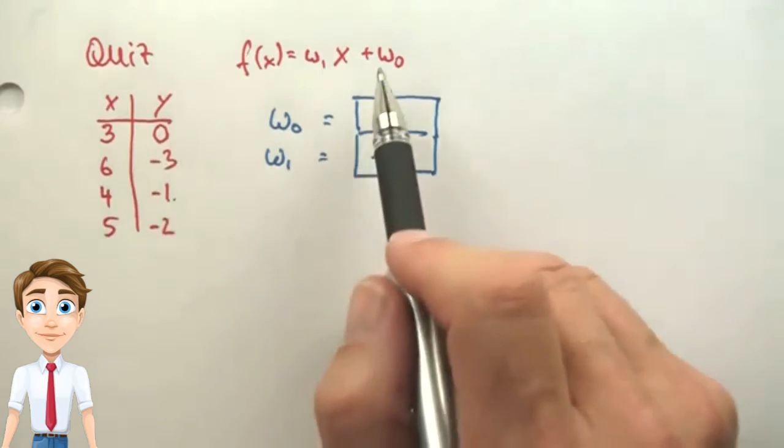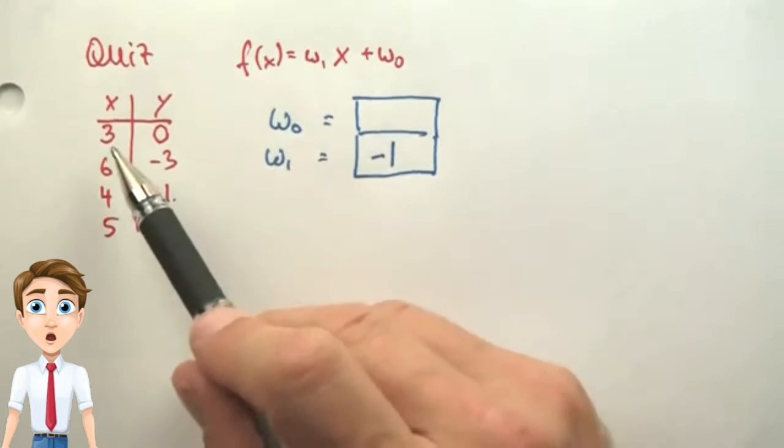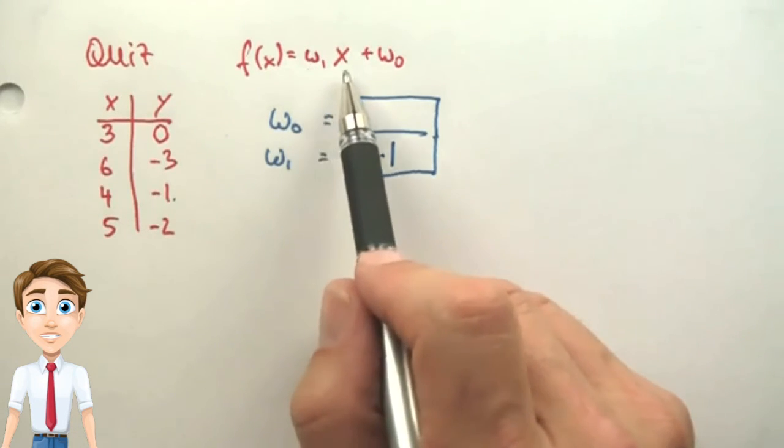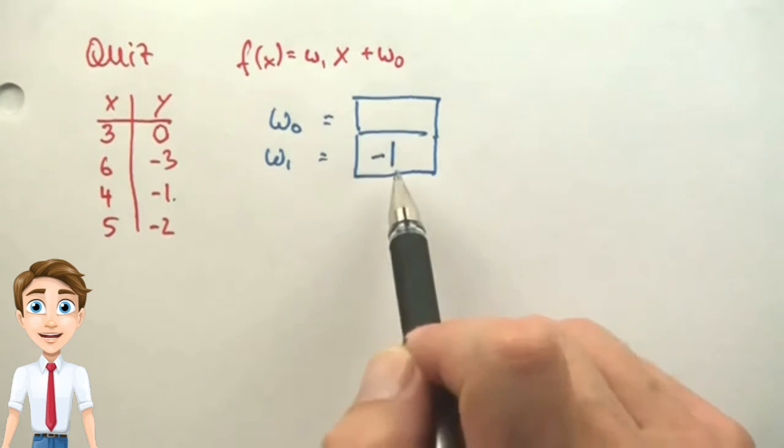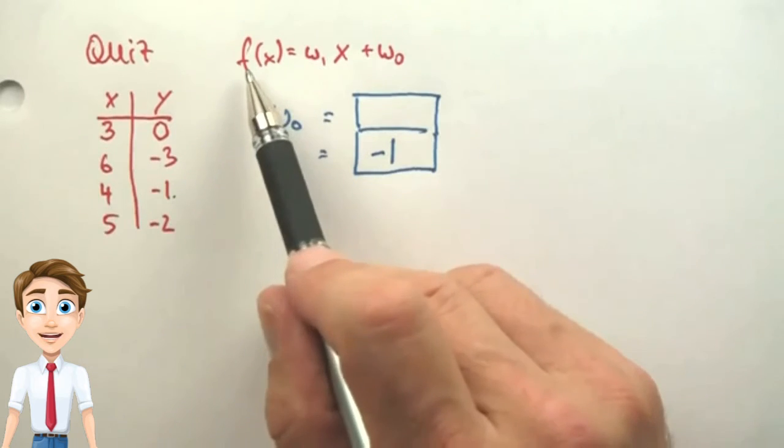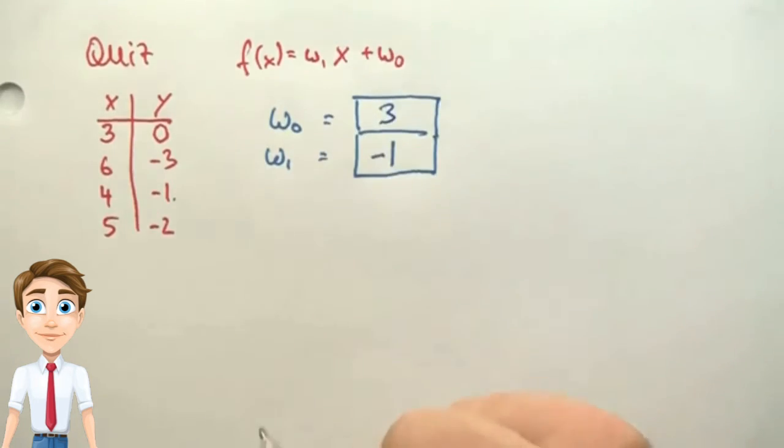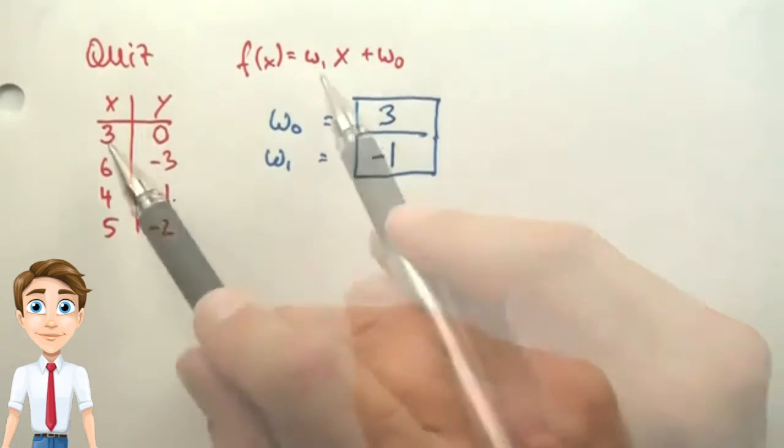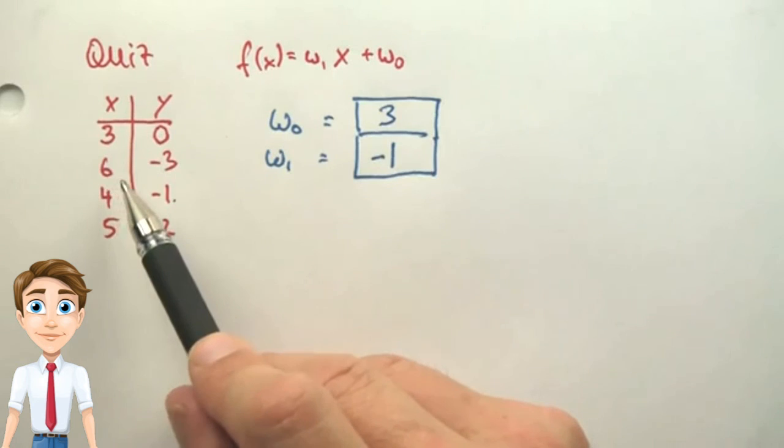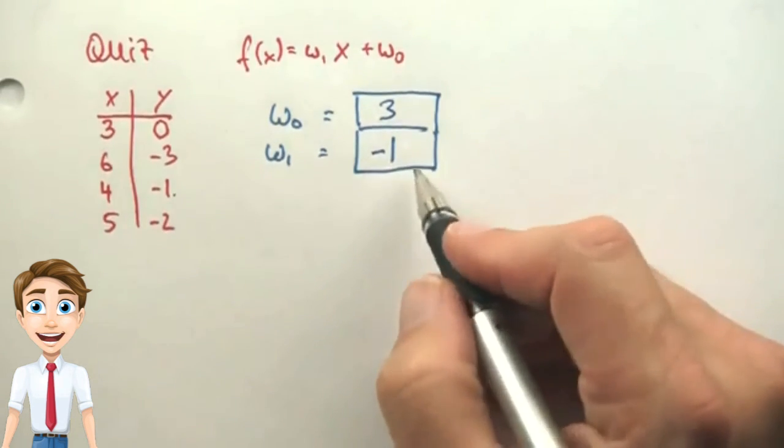Next, we have to get the constant w0 right. For x equals 3, we get minus 3 as an expression over here because we know w1 equals minus 1. So if this has to equal 0 in the end, then w0 has to be 3. Let's do a quick check. Minus 3 plus 3 is 0. Minus 6 plus 3 is minus 3. And if you plug in the other numbers, you find those are correct.